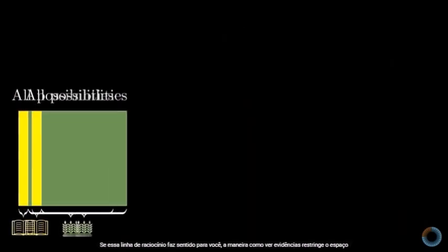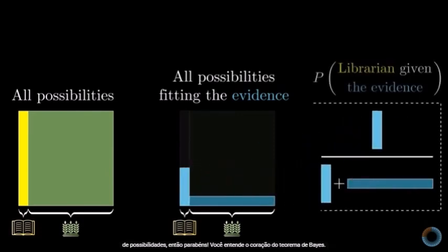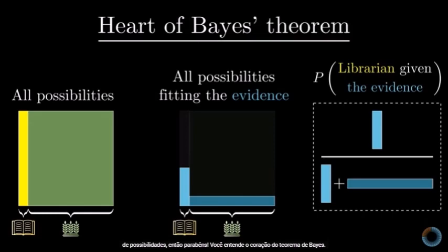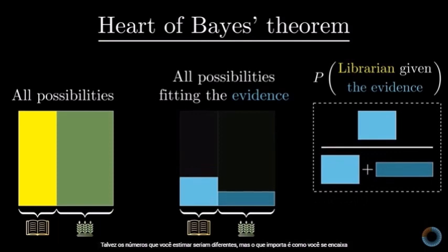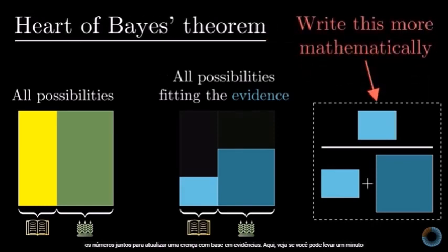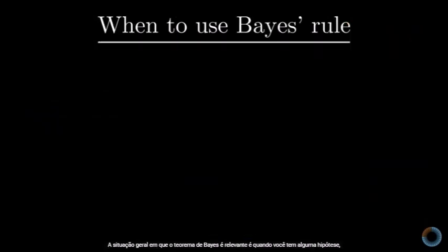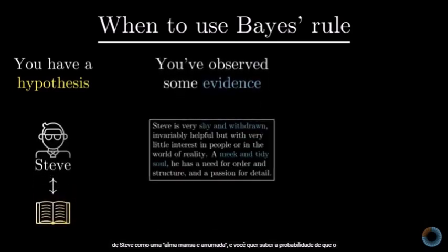If this line of reasoning makes sense to you — the way that seeing evidence restricts the space of possibilities, and the ratio you need to consider after that — then congratulations, you understand the heart of Bayes' theorem. What matters is how you fit the numbers together to update your beliefs based on evidence. The general situation where Bayes' theorem is relevant is when you have some hypothesis, like Steve is a librarian, and you see some new evidence, say this verbal description of Steve as a meek and tidy soul.